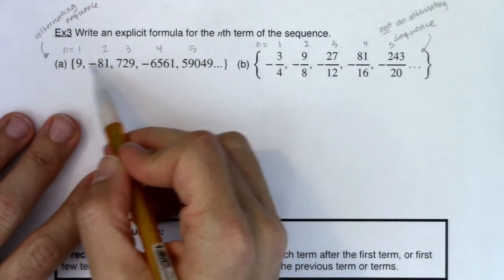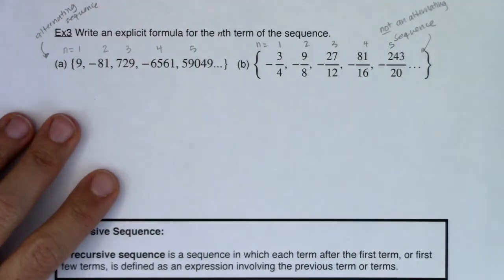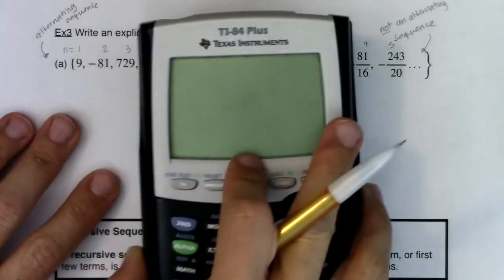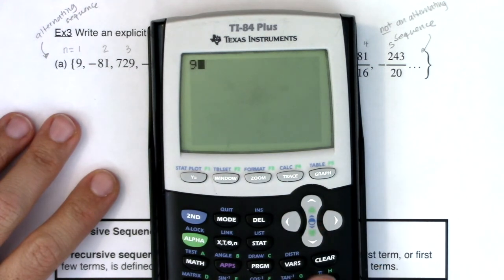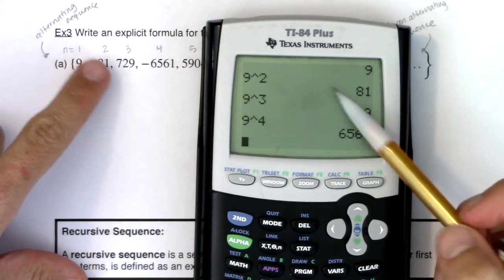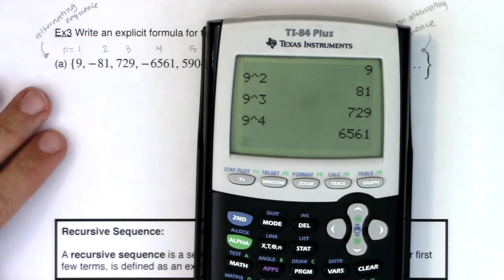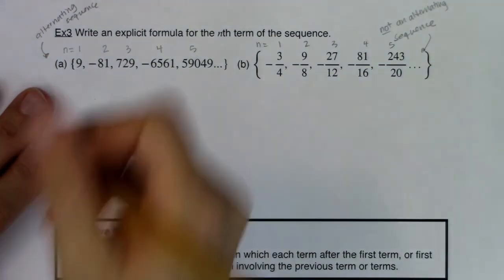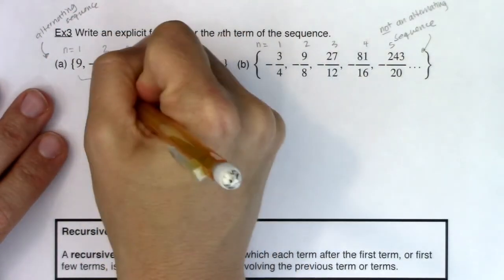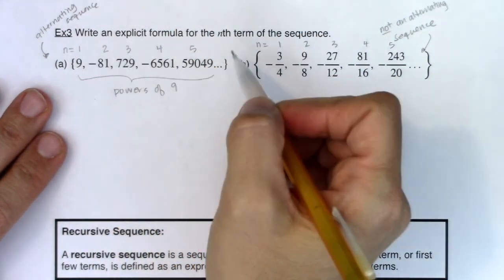Maybe your spidey senses are going off here. If you can spot the pattern, great. It really depends on how well you know your powers of 9. We know that 9 to the first power is 9, 9 squared is 81, 9 cubed is 729. Guess what 9 to the fourth is? 6561. So I can start to see these numbers are all powers of 9, which means I need my n up in the exponent.